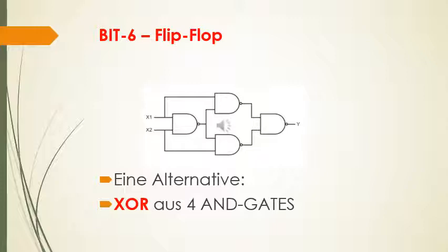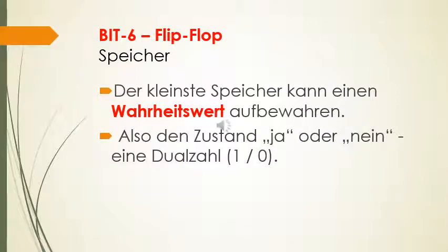XOR aus vier UND-Gattern. Der kleinste Speicher kann einen einzigen Wahrheitswert aufbewahren. Eins oder nicht.